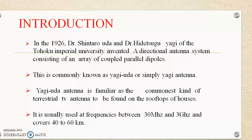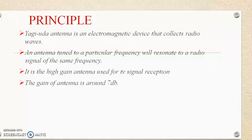The Yagi-Uda antenna is an electromagnetic device that collects radio waves. The basic principle behind this antenna is that the phase angle of the current depends on the length of the elements — specifically the length of the director and reflector. The length of the reflector is 5% greater than the length of the dipole or driven element, which leads to capacitive reactance. It is a high-gain antenna used for TV signal reception, with a gain of around 7 dB.